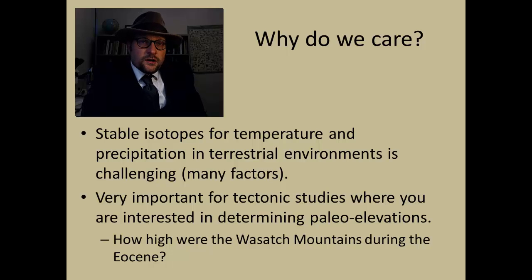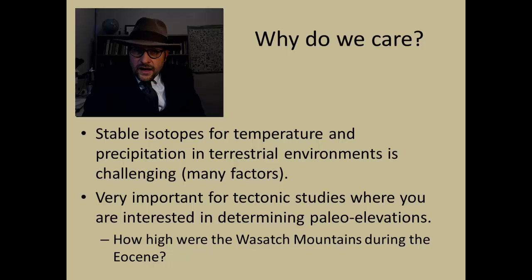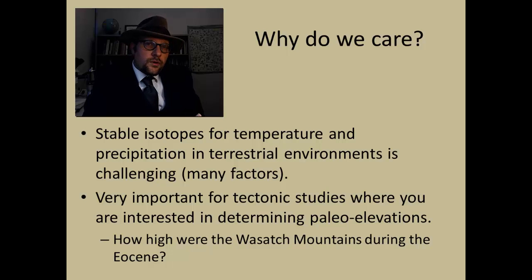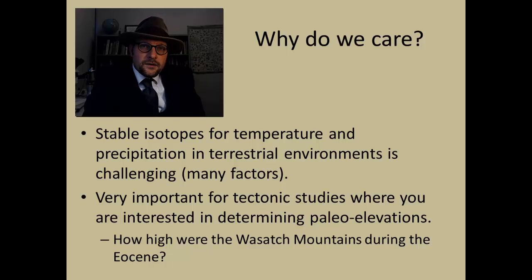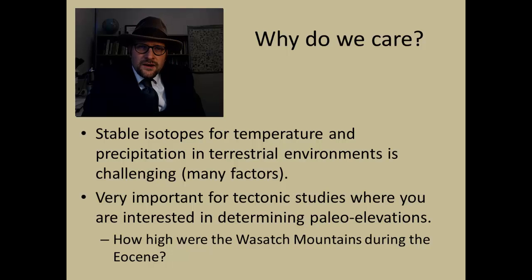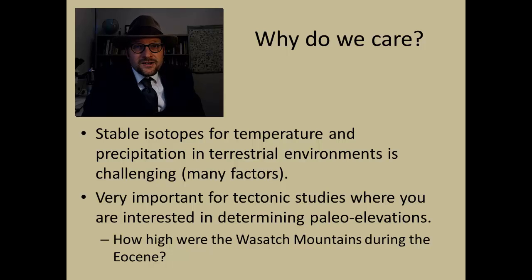So why do we care about this as geologists? Stable isotopes for temperature and precipitation in terrestrial environments are controlled by many factors other than temperature and precipitation, so fossil leaves are a key way to get at these proxies for climate in terrestrial settings and for the study of climate change over the geological past. The second important application is in tectonics, where we are interested in determining paleo-altitudes — for example, how high were the Wasatch Mountains here in Utah during the Eocene? We can use estimates of temperature and precipitation to help reconstruct a landscape that has vanished long ago. Fossil plants are really important tools for figuring out past climate, ancient landscape, and topography.